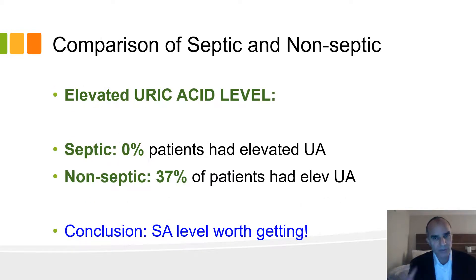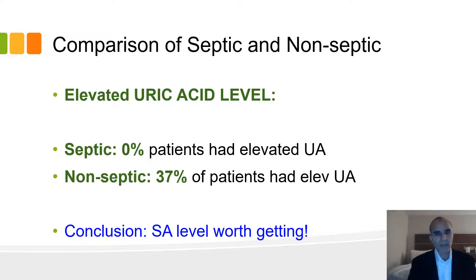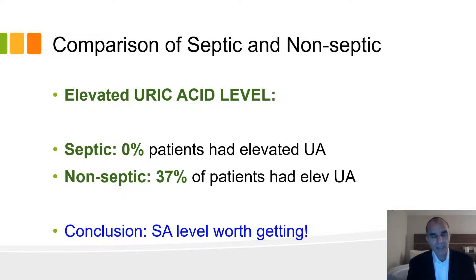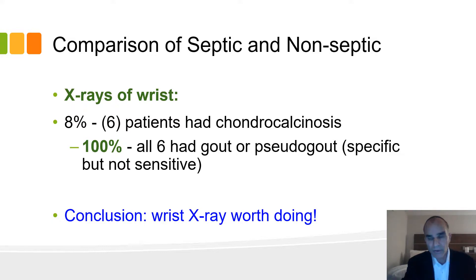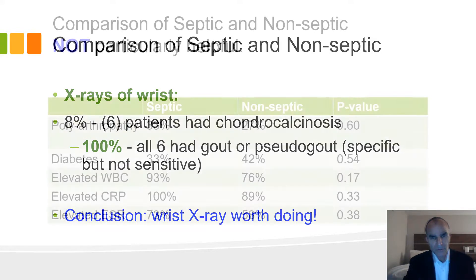When they compared the two groups, they found factors significantly guiding you toward one direction or the other — in particular, uric acid level. In the patients that were septic, none had an elevated uric acid level. In non-septic patients, about a third had an elevated uric acid. So it's not sensitive, but it appears specific, and uric acid level is certainly worth getting. When they looked at x-rays, only six had chondrocalcinosis — I'll show an example of that later — and most did not have any x-ray findings. However, when chondrocalcinosis was present, all of those patients had gout or pseudogout.